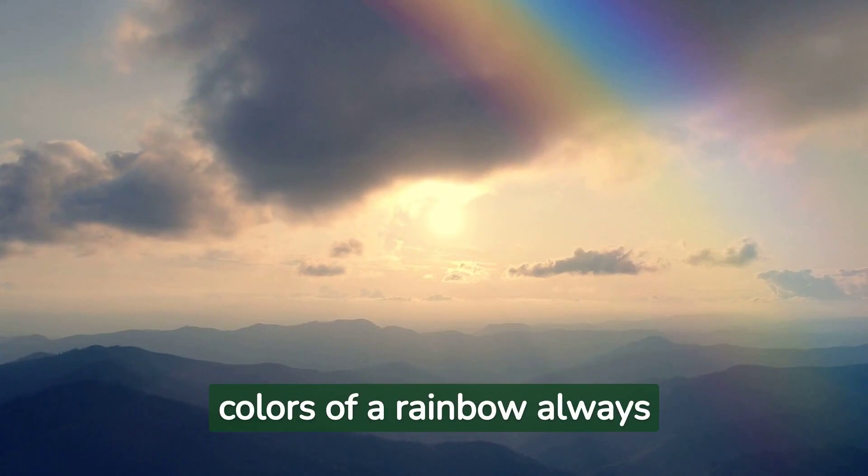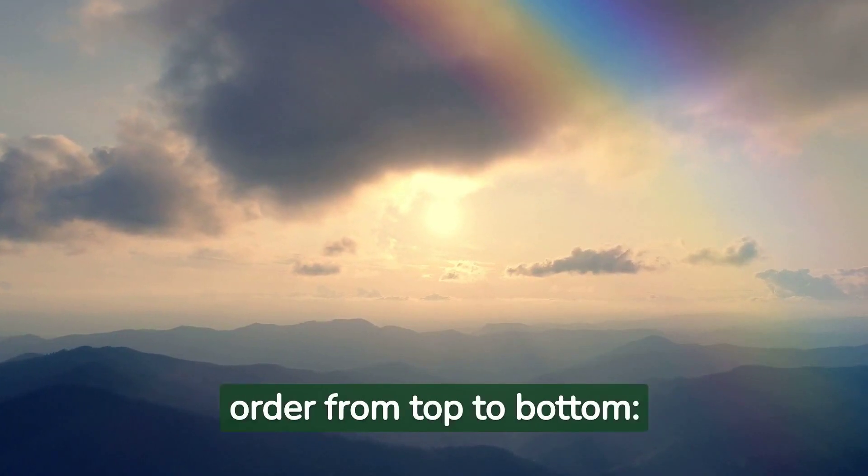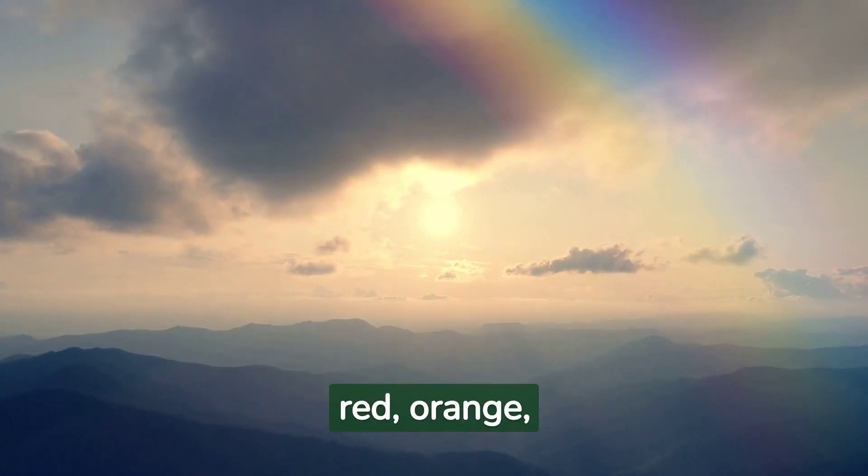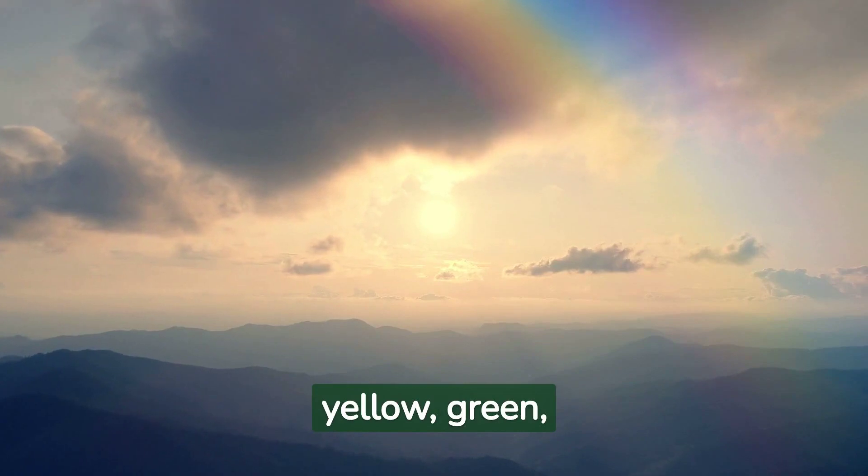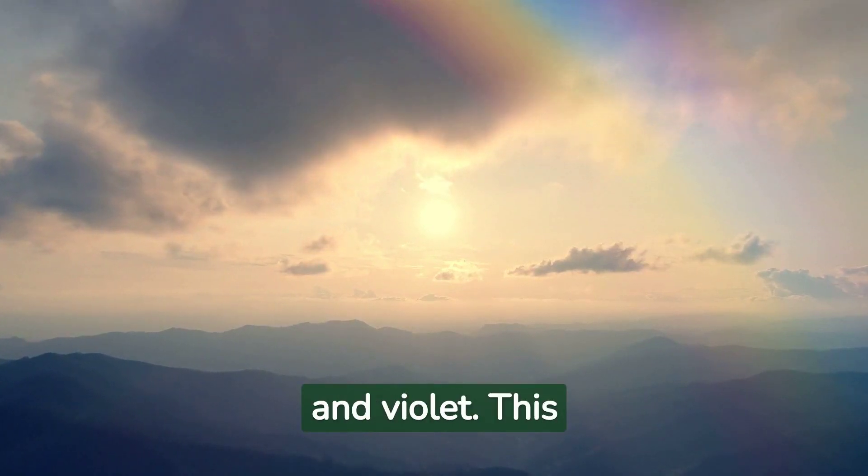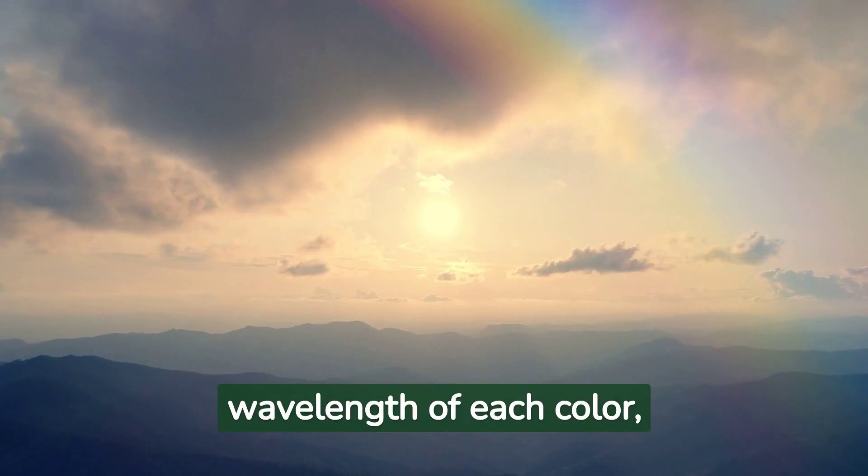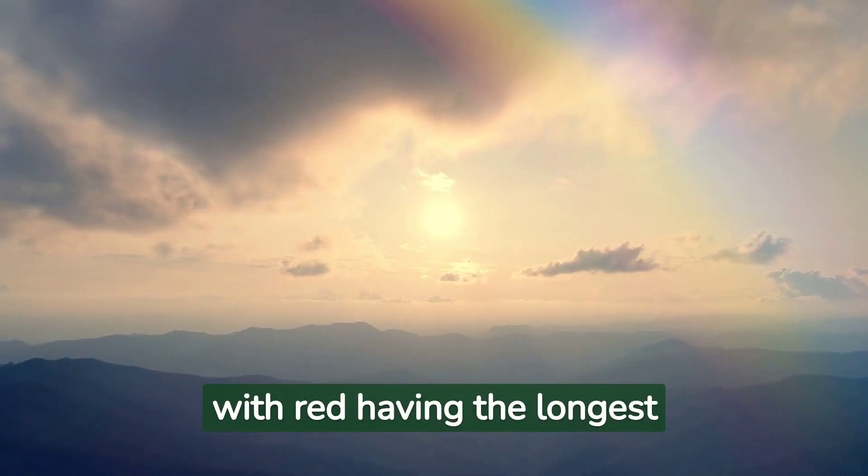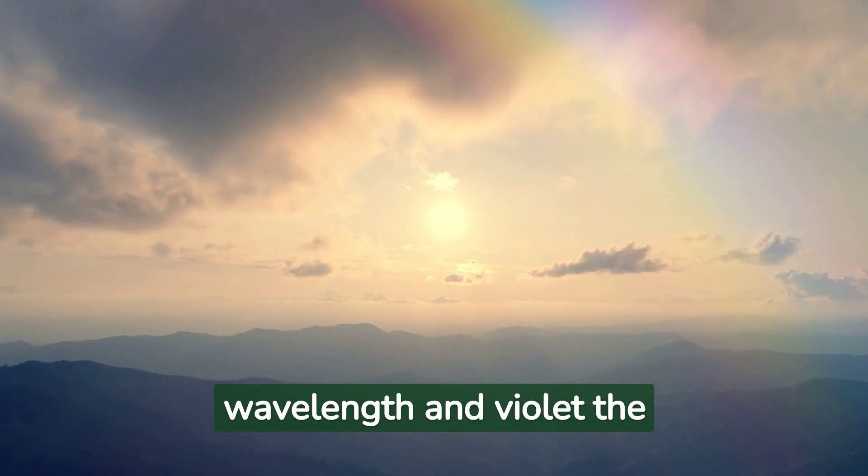The colors of a rainbow always appear in a specific order from top to bottom: red, orange, yellow, green, blue, indigo and violet. This order is determined by the wavelength of each color, with red having the longest wavelength and violet the shortest.